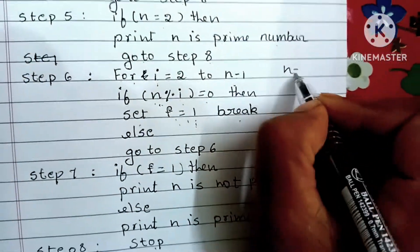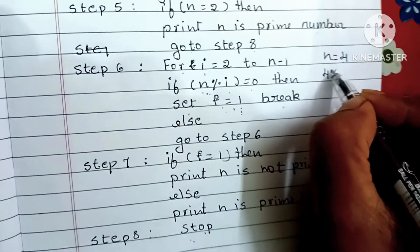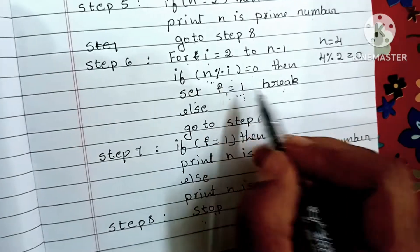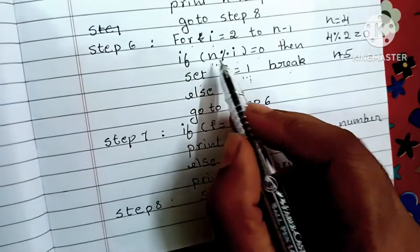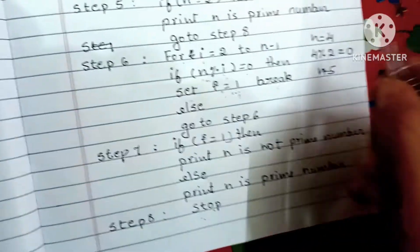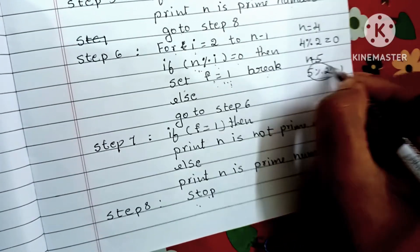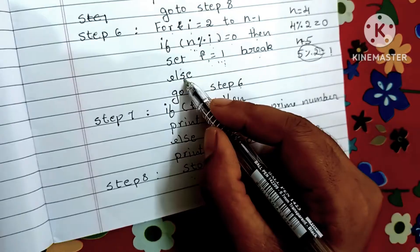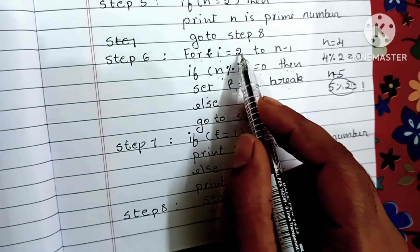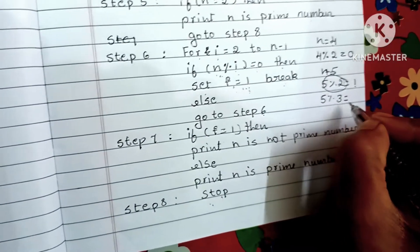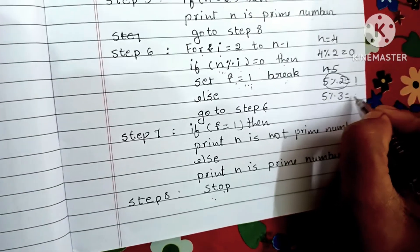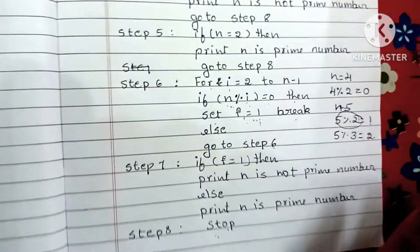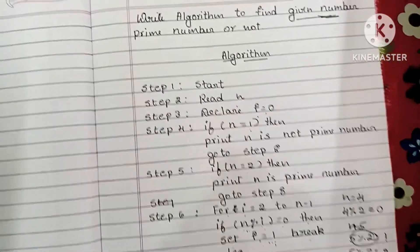Example: if N equals 4, we check 4 mod 2 equals 0, so we set F equal to 1 and break — 4 is not prime. If N equals 5, we check 5 mod 2 equals 1 — not zero, so we continue. Then I becomes 3: 5 mod 3 equals 2 — not zero. The loop ends and F remains 0, so 5 is a prime number.